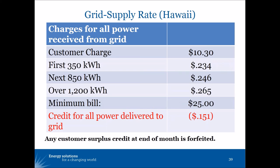The basic energy rate is a three-step inclining block rate. They changed two things for new solar customers: first, they imposed a minimum bill of $25 a month to get a minimum contribution towards system costs from every customer; and second, rather than allowing a full net metering credit when the customer is delivering power to the grid, the credit is only 15 cents a kilowatt hour.